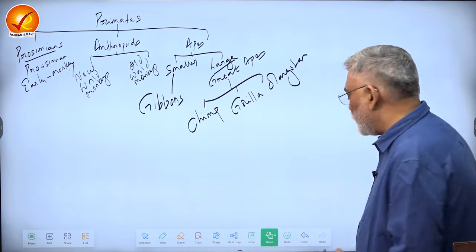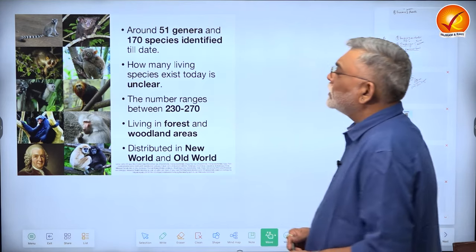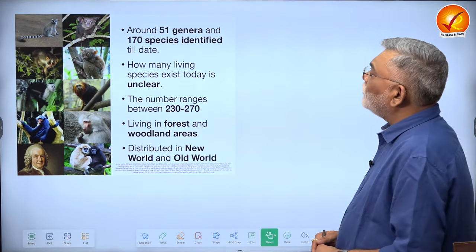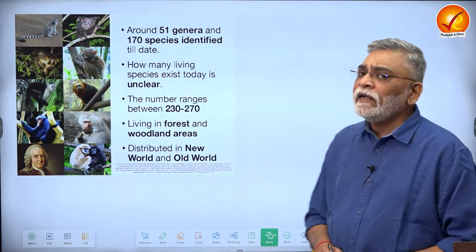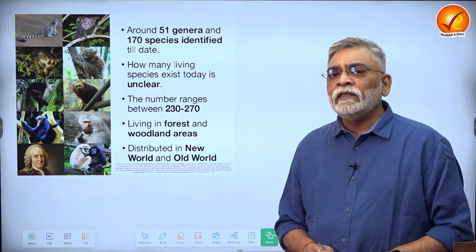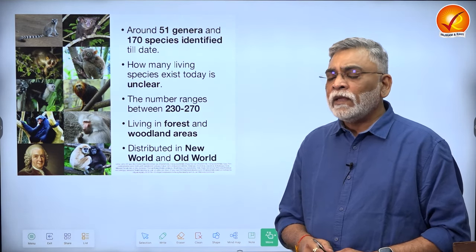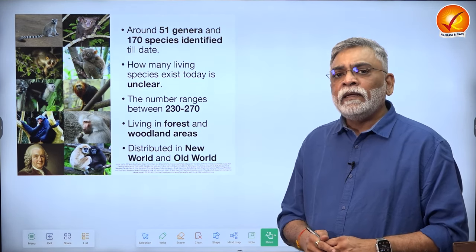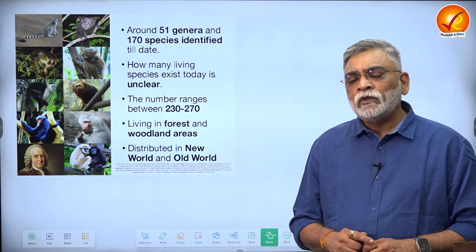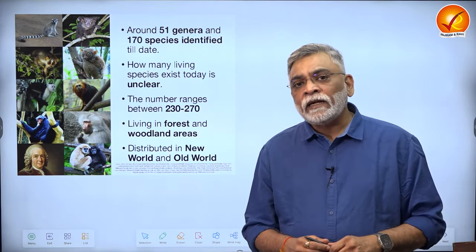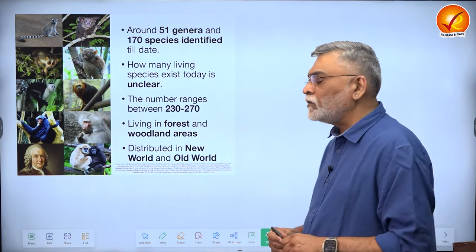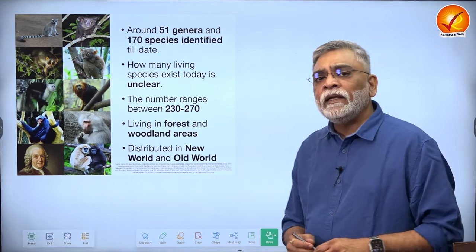This is a very broad classification of the order primates, and we will be looking at a detailed classification subsequently. This slide essentially captures the number of species and genera. Genera is the plural for genus. There are around 51 genera and about 170 species identified till date, but we do not have the exact number - probably there are many more yet to be discovered, especially in Central and South American rainforests.